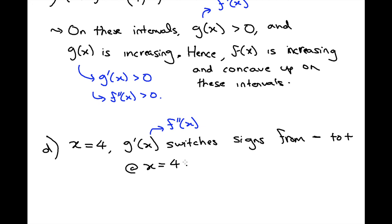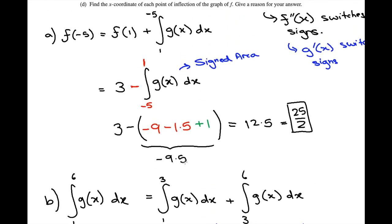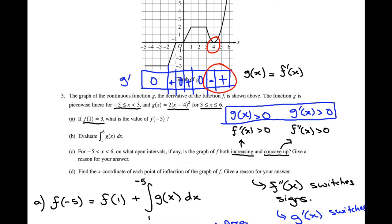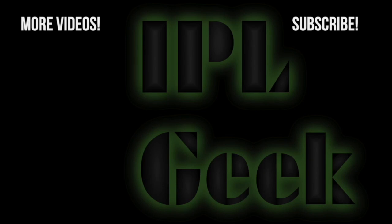And that brings us to the end of this problem. I'll check the answer key before posting just to make sure everything's right. That's basically what your average AP Calculus BC FRQ is like — I hope you enjoyed the video. Please let me know if you'd like to see more of this content, and if you found it helpful, please like, share, subscribe, leave a comment, and check out some other videos. See you next time!